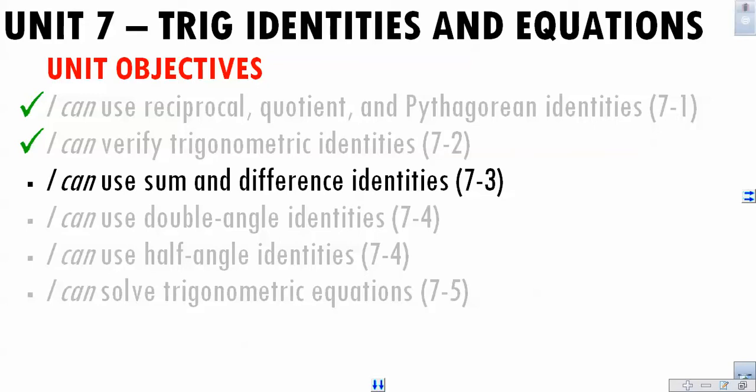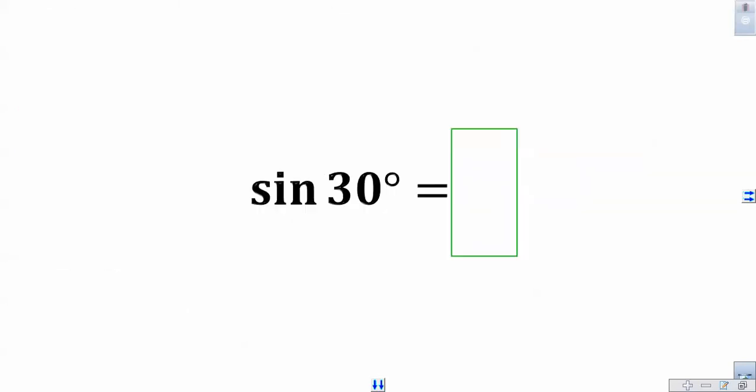Let's first lay a foundation for why we need these sum and difference identities. If I were to ask you what the sine of 30 is, using a unit circle you could easily tell me that the sine of 30 is 1 half. Now what about the sine of 60? Sine of 60, same thing, unit circle tells us it's square root of 3 over 2. If I ask what the sine of 90 is, sine of 90 would be 1.